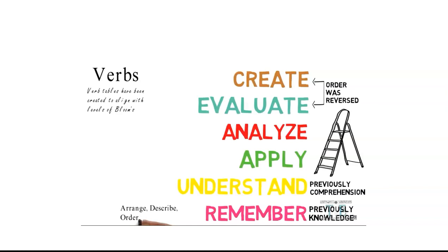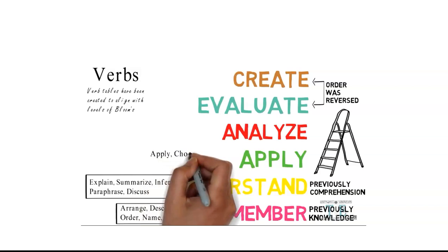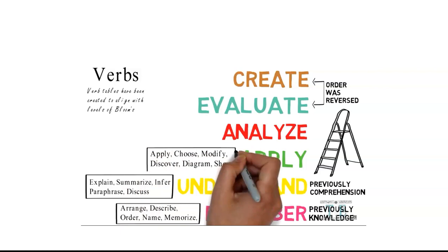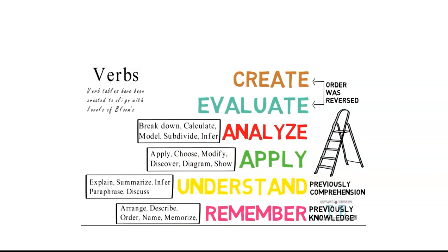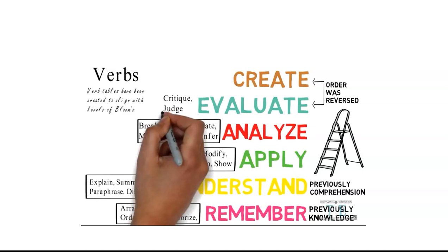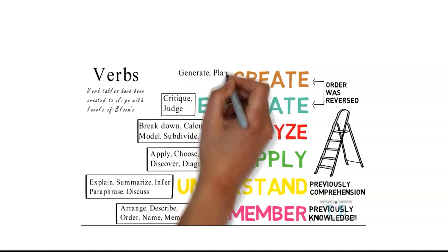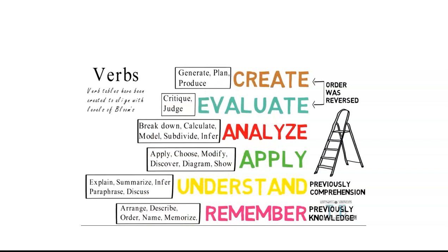Verbs such as arrange, describe, order, name, and memorize are used for the remember level. Explain, summarize, paraphrase, infer, and discuss are aligned with understanding. Breakdown, calculate, model, and subdivide are aligned with analyze. Critique and judge are aligned with evaluation. Generate, plan, and produce are aligned to the top level — create.